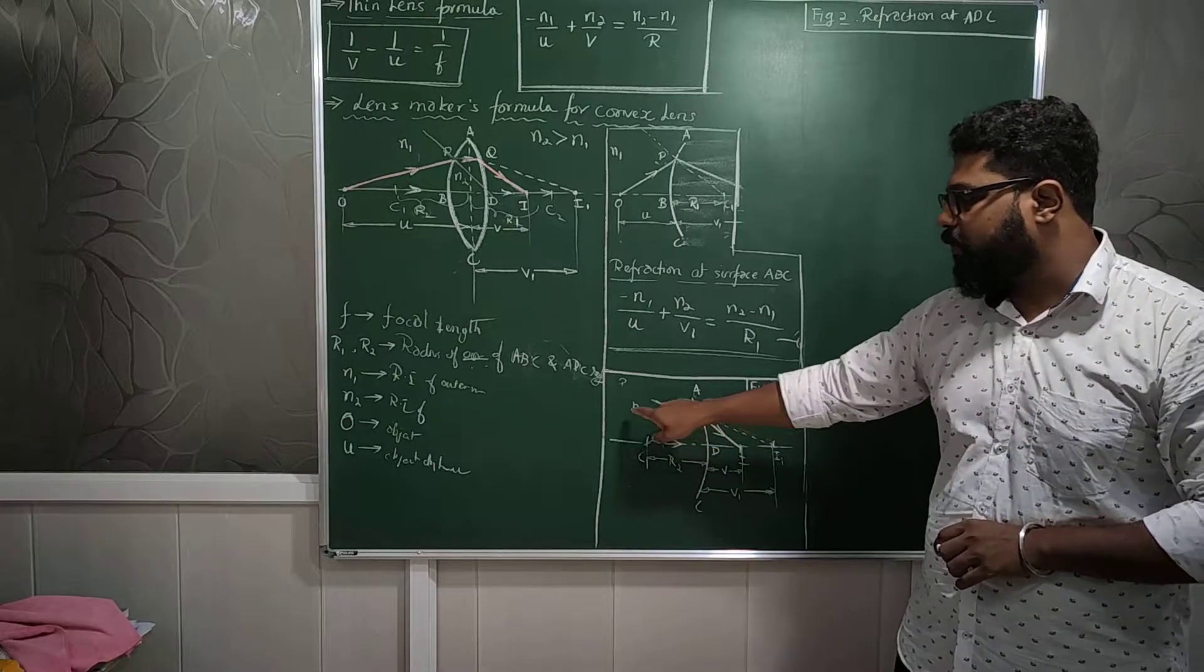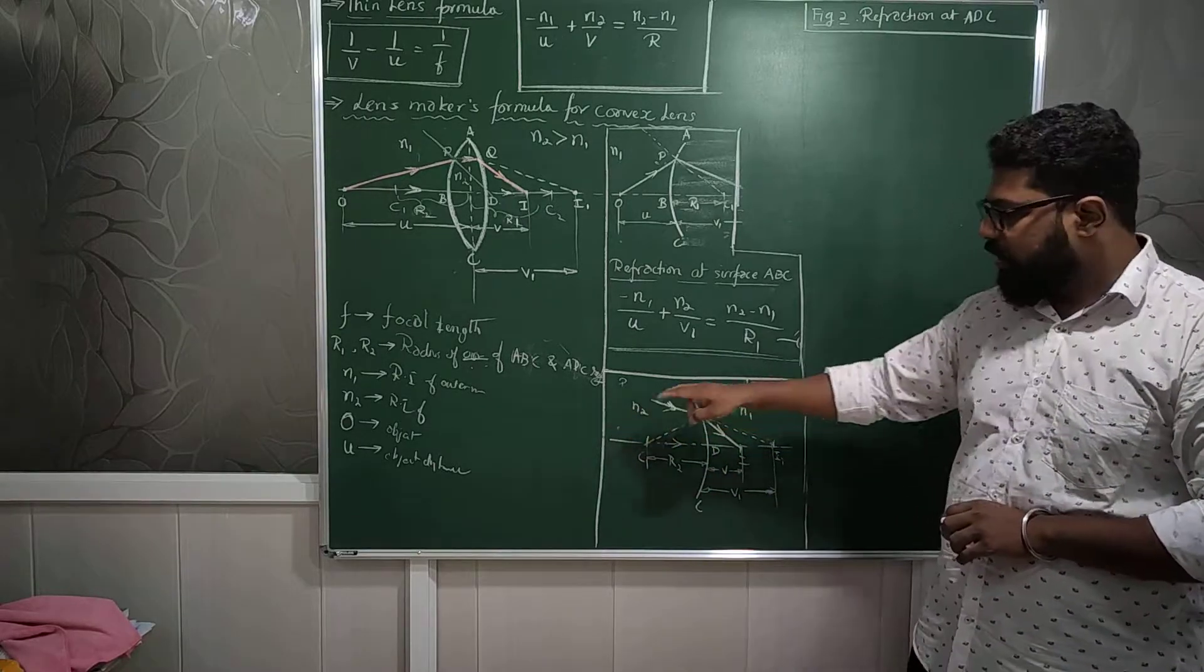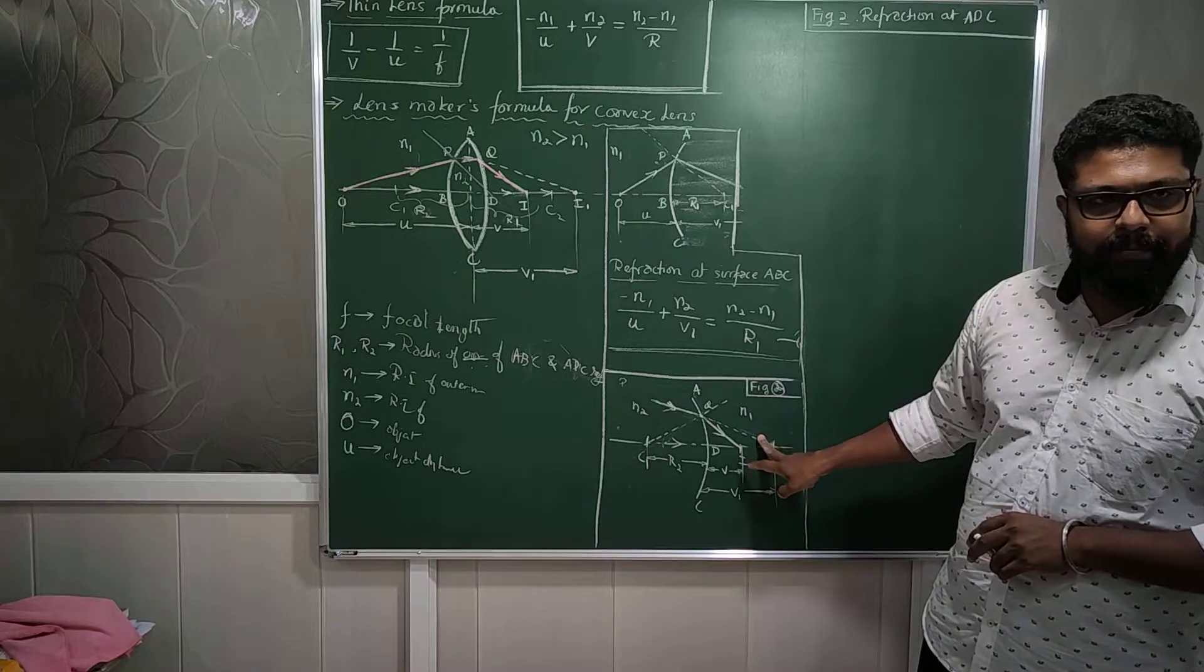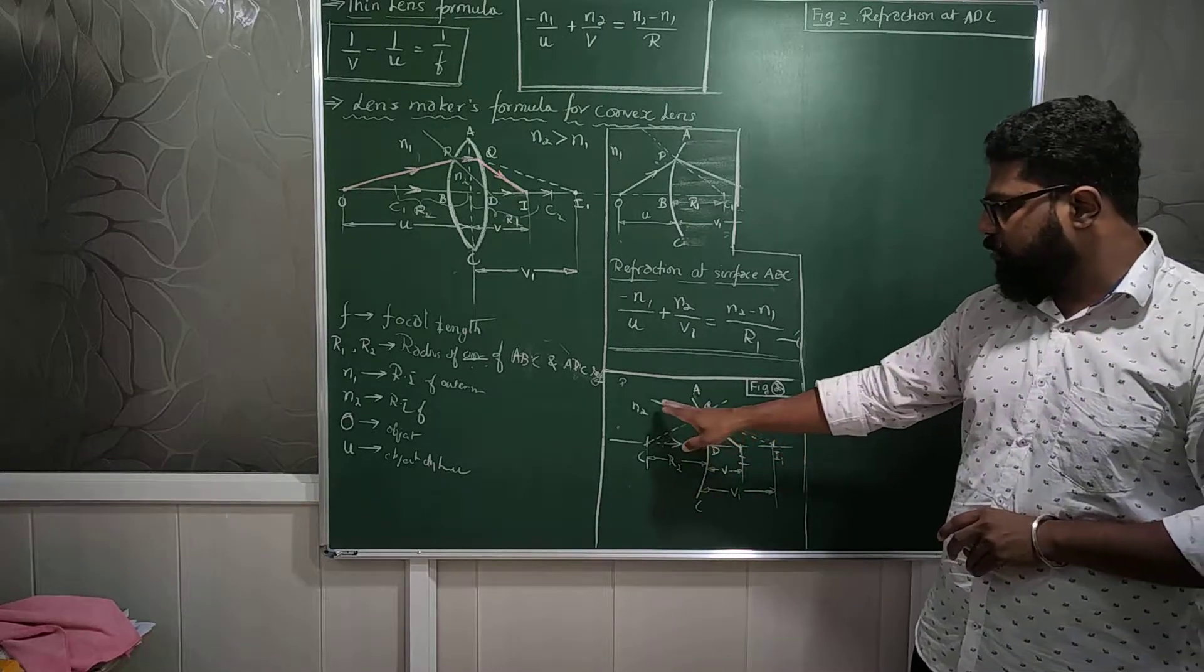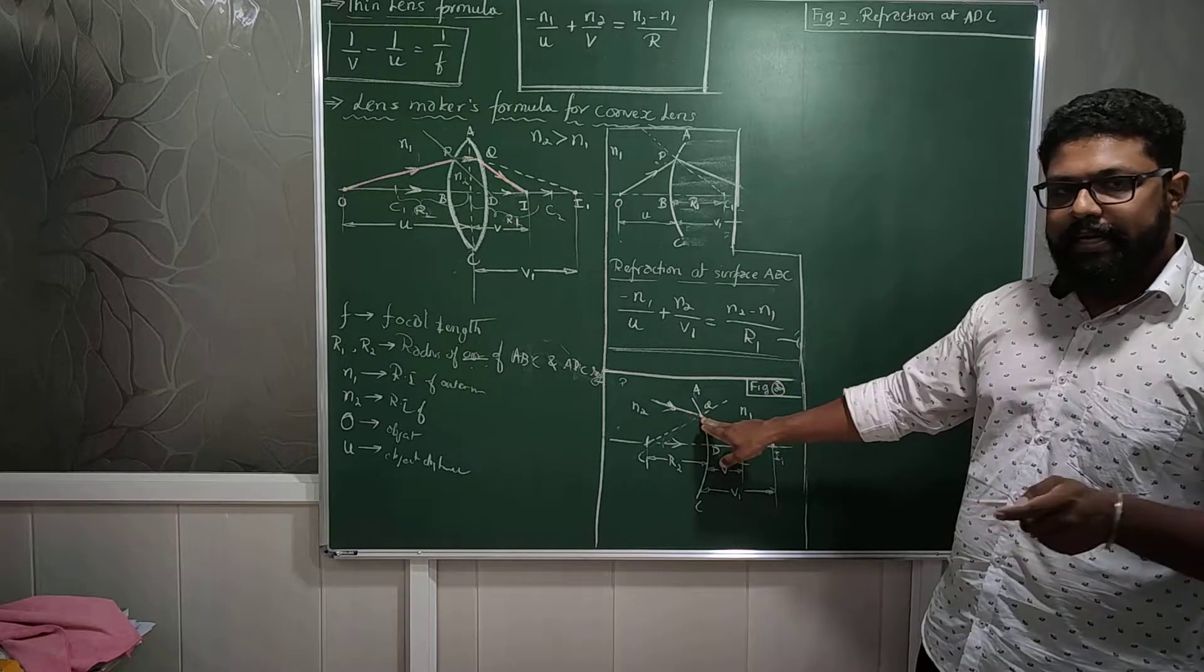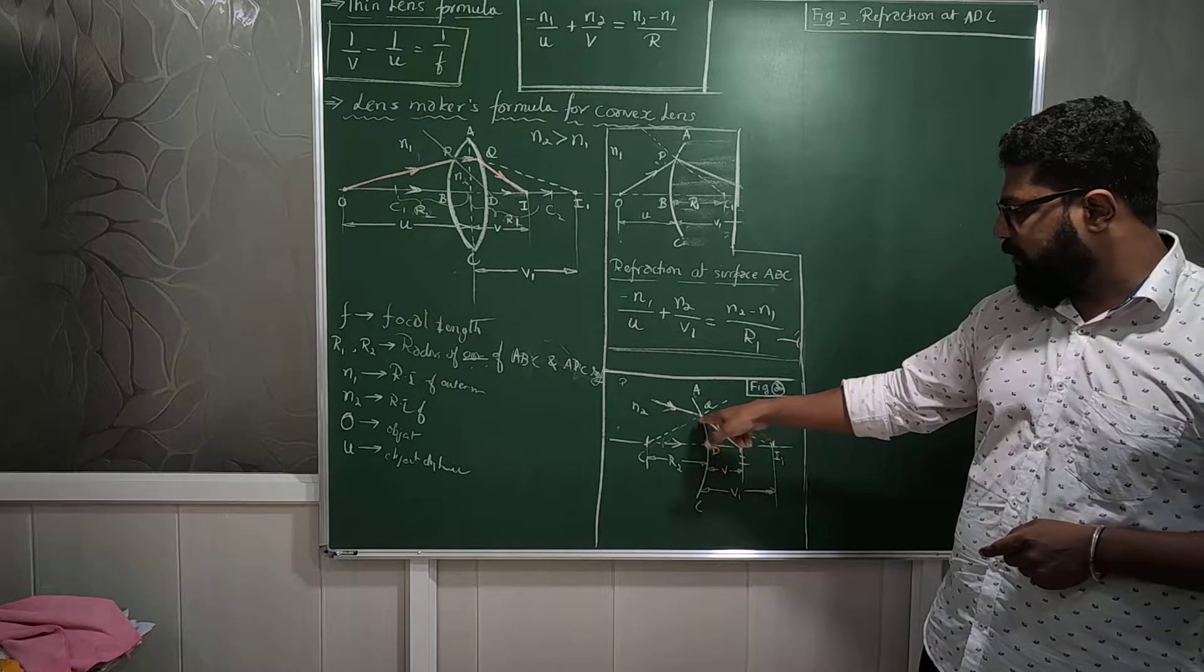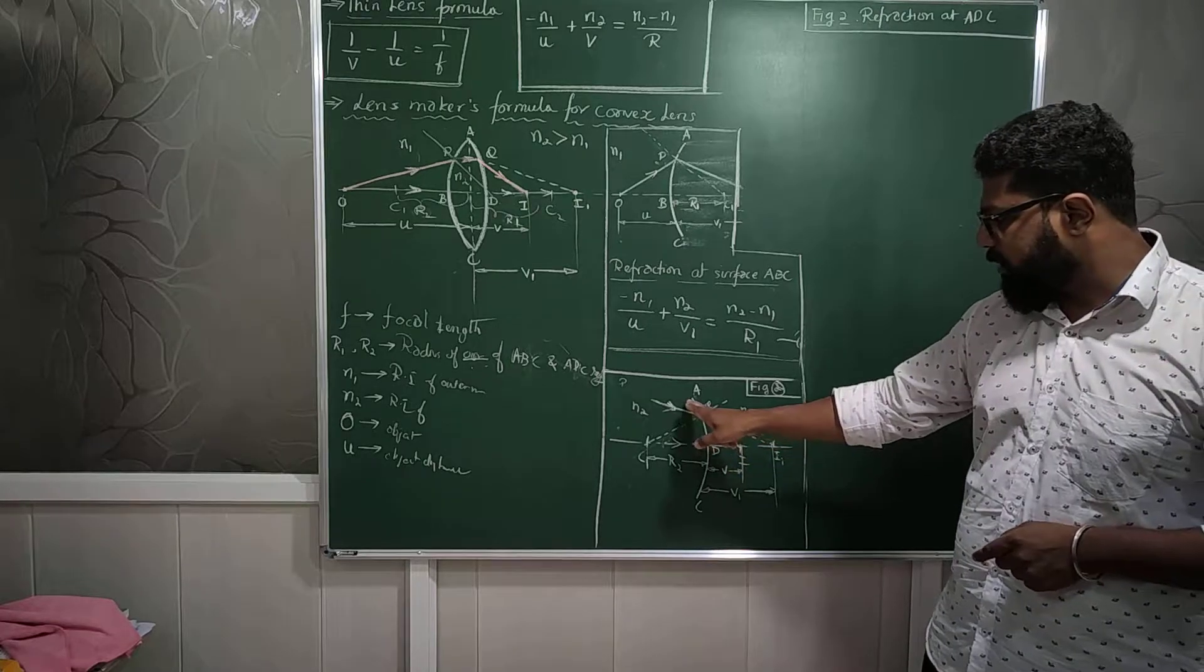The light ray will come and fall at this one, from the refractive index N2 to the refractive index N1. So from the lens to the outer world atmosphere. So now what happens, the light ray coming from the denser medium to the rarer medium, it bends away from the normal. Normal is this point.